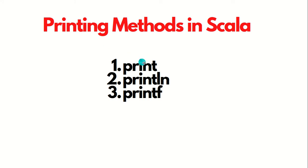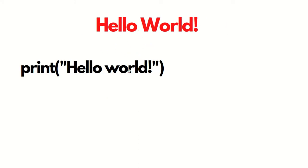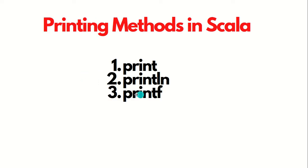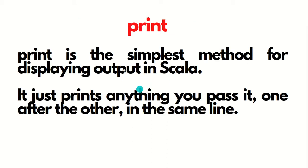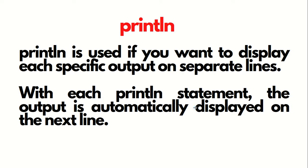What are the different printing methods in Scala? The first method is print — it is the simplest method for displaying output in Scala. It prints everything you pass to it one after another on the same line. Then we have println, which means new line — if you want to display each output on a separate line, you should use println.